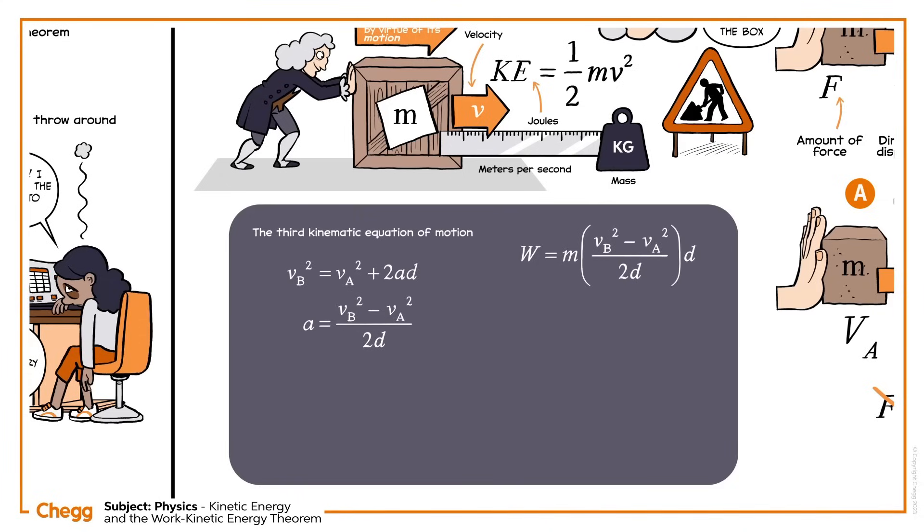With a bit of simplification cancelling out the Ds, we see that work done equals the change in the quantity half MV squared. Does that look familiar? Of course. That's the formula for kinetic energy. So, another way of saying this is that work done on an object is equal to the difference in kinetic energy KE from one point to another. And just like that, we've proved the work energy theorem.